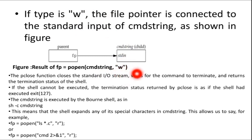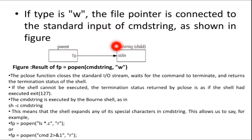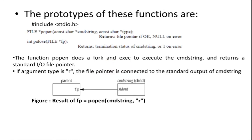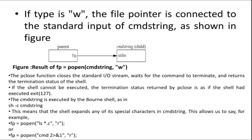In the same way, if it's for writing, the type changes from 'r' to 'w'. The file pointer is connected to the standard input of the command string because you are writing to the command string — the parent is writing to the child. So if you want to write, you can write to the standard input. I'm opening the file and writing to the command string, which is the child's standard input, using popen with type 'w'.